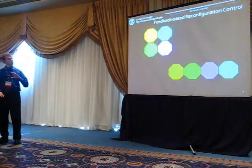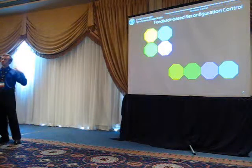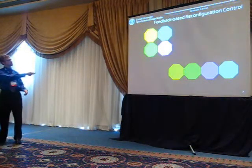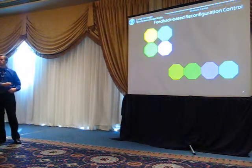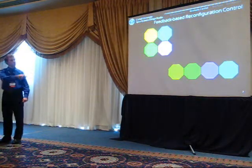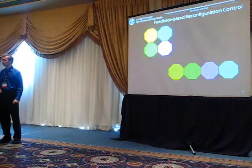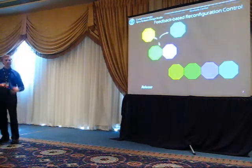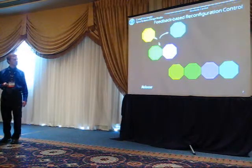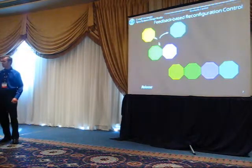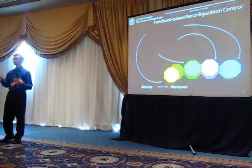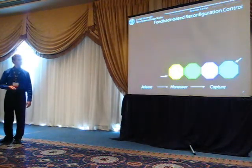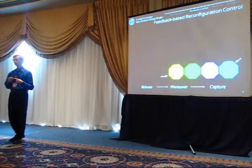Let me talk about the typical way we think about reconfiguring space systems. Suppose you have a system composed of modules — vehicles docked together — and you want to get them into a new configuration. The straightforward way is to have them all undock from one another, let go, solve some kind of multi-body tracking problem, do collision avoidance, maneuver to the final state, and then have them all capture each other again at the end state.